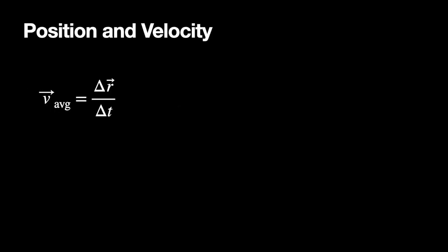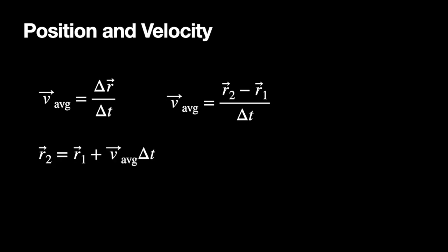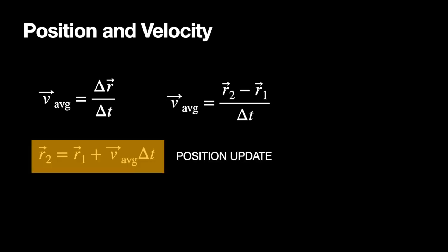Now we need to consider position and velocity. We define average velocity as the change in position divided by the change in time. We use r for position because it's in three dimensions. r1 is the position at the beginning of the time interval, r2 is at the end. Multiplying by delta t and adding r1 to both sides gives r2 equals r1 plus v_average times delta t. That is the position update formula.